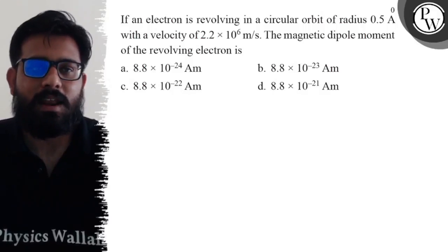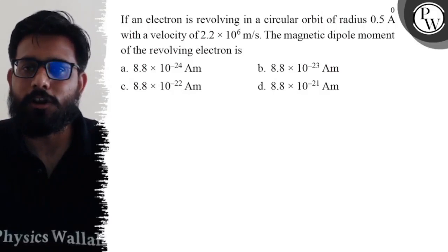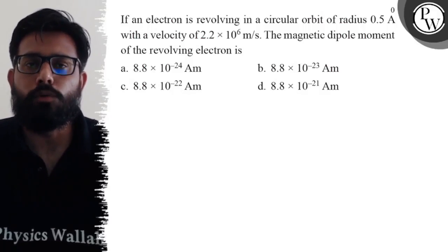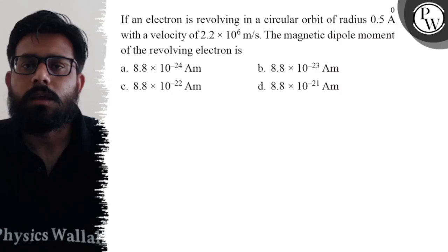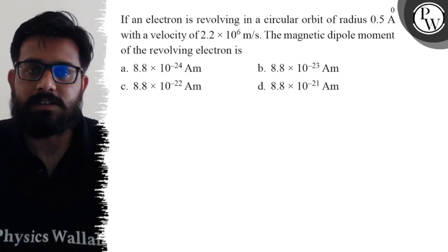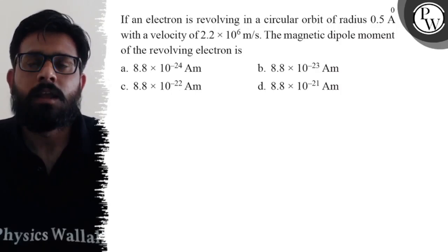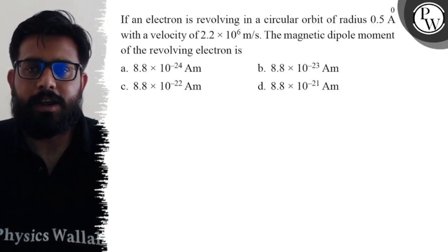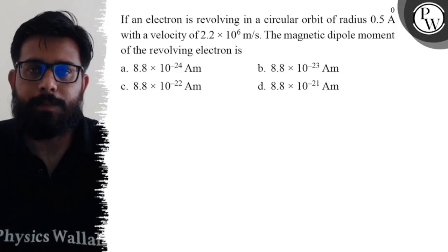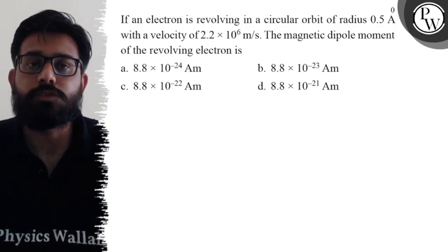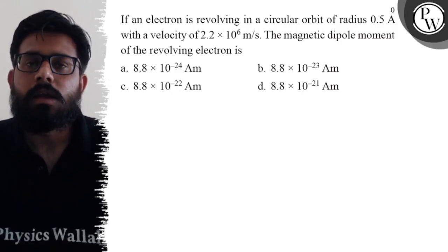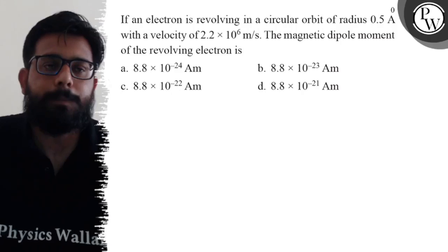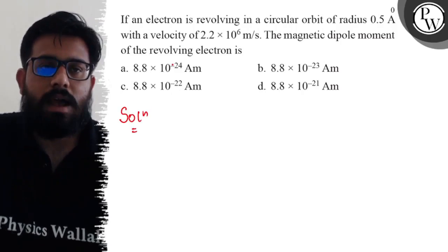Let's see the question: if an electron is revolving in a circular orbit of radius 0.5 angstrom with a velocity of 2.2 × 10⁶ m/s, the magnetic dipole moment of the revolving electron is — option A: 8.8 × 10⁻²⁴ A·m, option B: 8.8 × 10⁻²³ A·m, option C: 8.8 × 10⁻²² A·m, option D: 8.8 × 10⁻²¹ A·m.